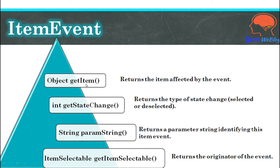getItem returns the item that is affected by this event. getStateChanged returns the type of state that is changing — whenever it is selected it returns the selected constant, and if it is deselected it returns the deselected constant. paramString returns a string containing all information about this item event. getItemSelectable returns the object that originated this event.